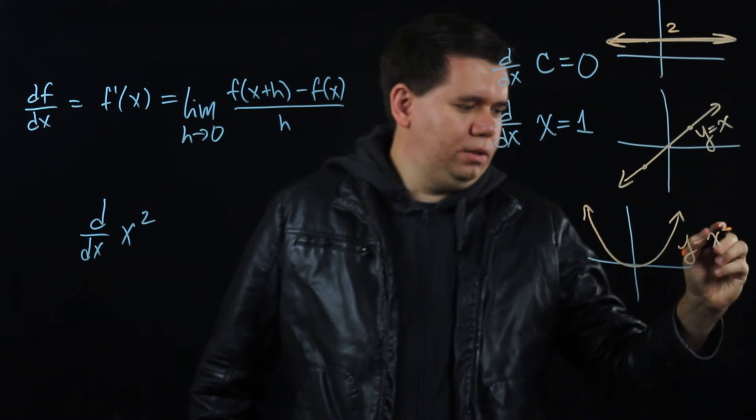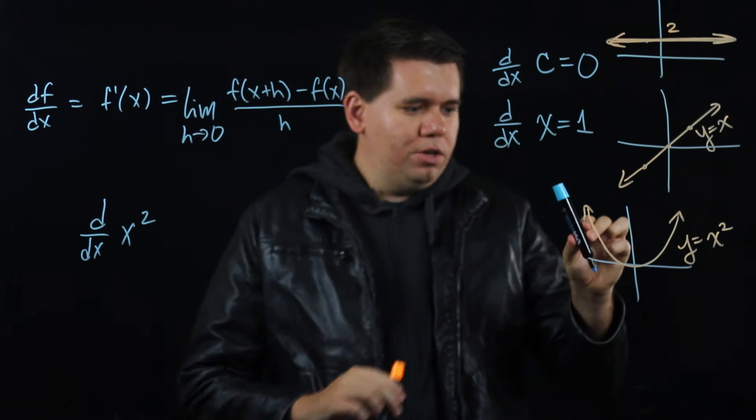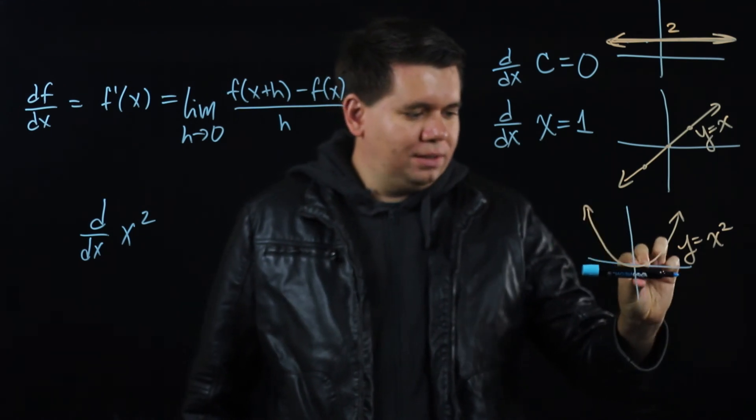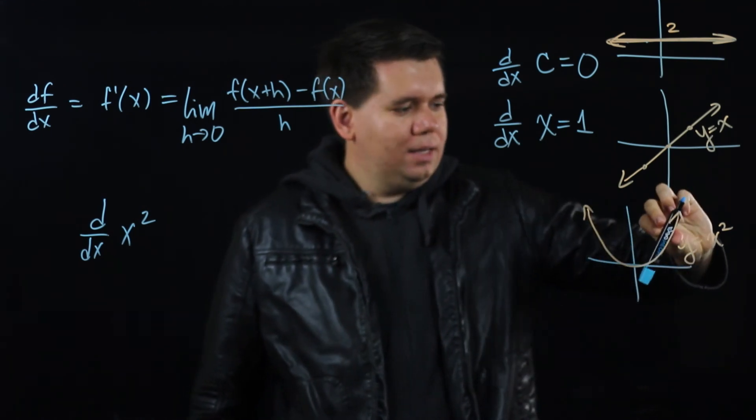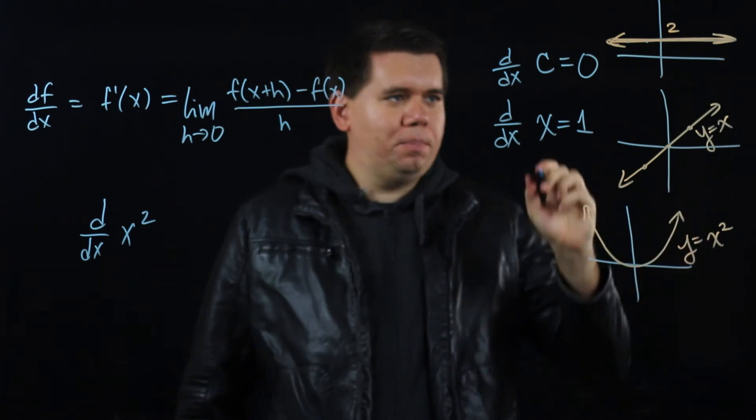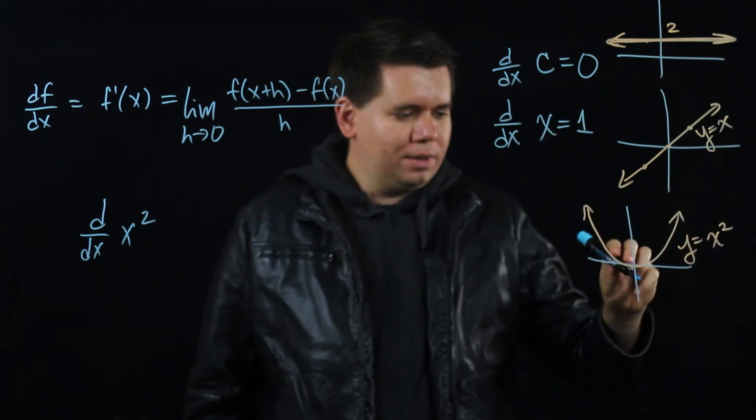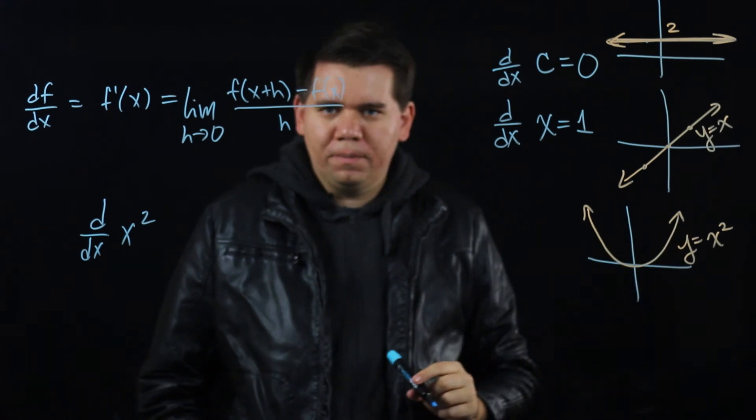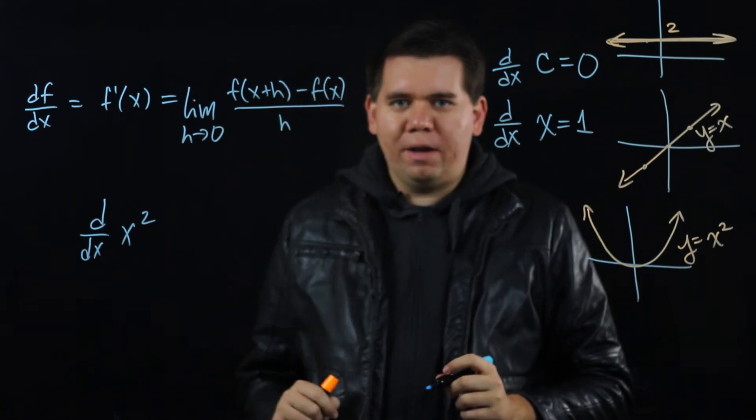Because you'll notice the slope is changing. When you're over here, you have a negative slope. Then you have a 0 slope. Then you have a positive slope. So it's changing. So it won't just be something like 0 or 1. Sometimes it's negative, 0, sometimes it's positive. So we need to follow our definition.